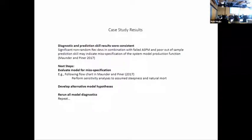These case study results - the suite of diagnostics were pretty consistent. The diagnostic prediction skill results were consistent. There were significant non-random recruitments in combination with the failed age structure production model, poor out-of-sample prediction skill. If you look back at the flowchart from Maunder and Piner 2017, they have an interesting discussion about how this may indicate a failure in the system model or in estimating the production function, and that the next steps would be to go back and evaluate sensitivity there. In our case this has been a useful exercise.